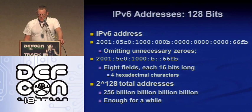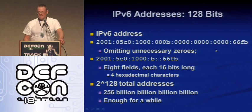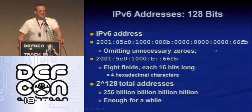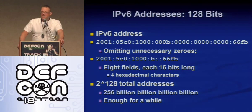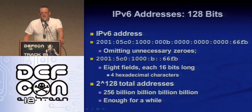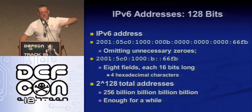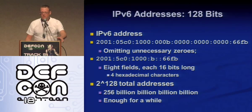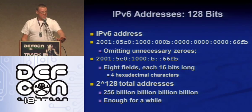IP version 6 is the answer — make the addresses really long and disgusting, in hexadecimal. That is an IP version 6 address, learn to love it. That is 128 bits long, and the good thing is there are enough of them — 256 billion billion billion billion billion. So until we colonize the entire galaxy and have every atom in our body individually addressed, we're not going to run out. We will not have to have IP version 7 in another ten years, at least not because we ran out of addresses.